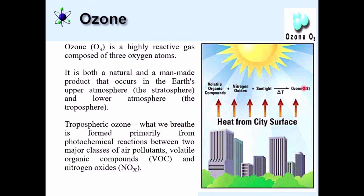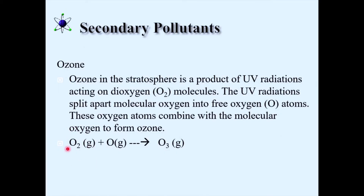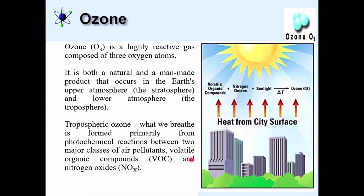In the stratosphere, just at its beginning, ozone is formed by the reaction of UV radiation with dioxygen. Ozone is formed in two different places in two different ways. If ozone is present in the troposphere it is called a pollutant; if it is present in the stratosphere it is called a protective blanket.